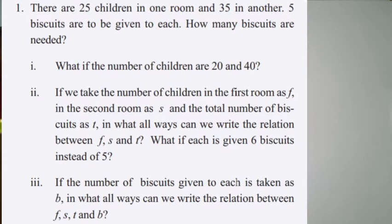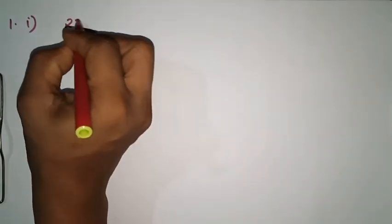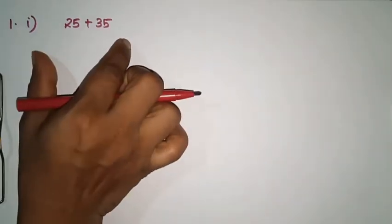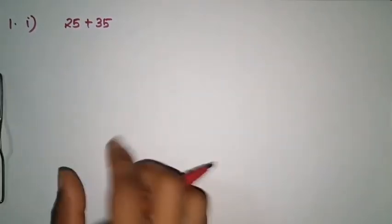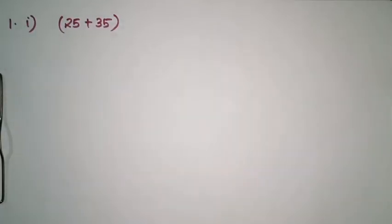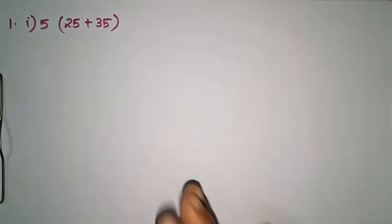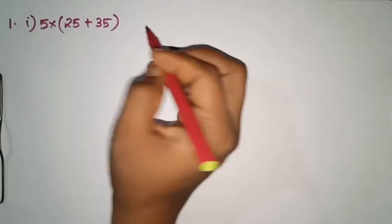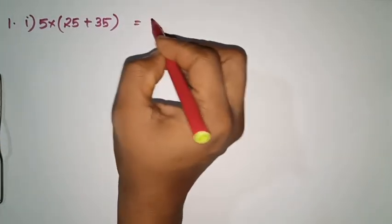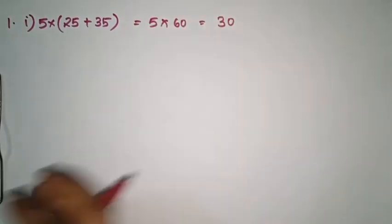Let's try the first question. We have 25 and 35 children. We put them together: 25 plus 35 is 60. Then we multiply by 5 biscuits each. That means 60 times 5 — we need 300 biscuits in total.